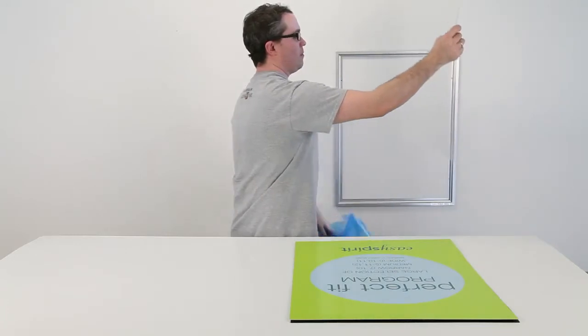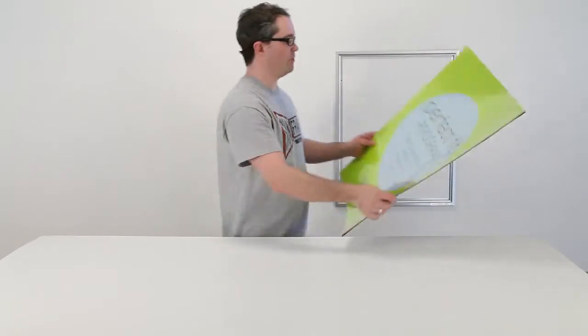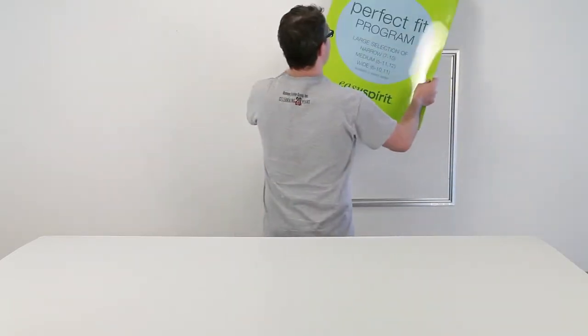When the film has been removed and the overlay is clear, place it over your graphics. Keep the materials aligned and simply slide them into the poster frame. And that's it.